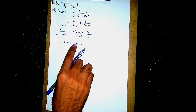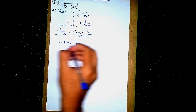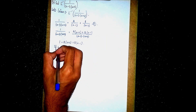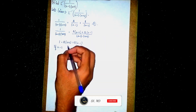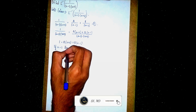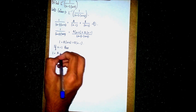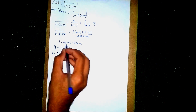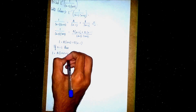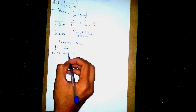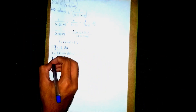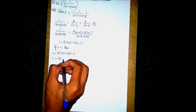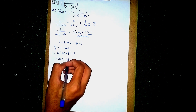Now we substitute values to eliminate either A or B. Let s equal to 1. Substituting into equation 1: 1 is equal to A into (1 plus 2) plus B into (1 minus 1). This eliminates B, giving 1 equals A into 3 plus B into 0.